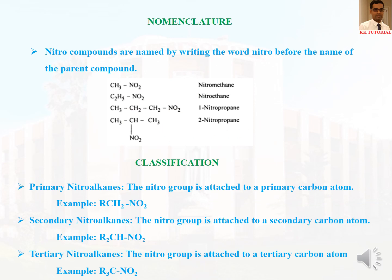When we come to nomenclature, nitro compounds are named by writing the word 'nitro' before the name of the parent compound. For example, a methyl group gives nitromethane, an ethyl part gives nitroethane, and a propyl part with the nitro group on the first carbon atom gives 1-nitropropane. When the nitro group is on the second carbon atom, it is 2-nitropropane.